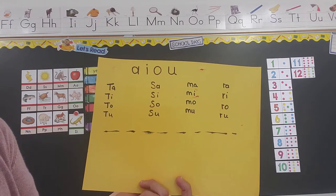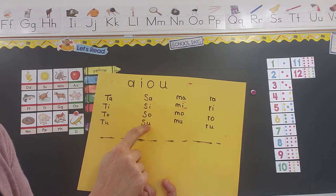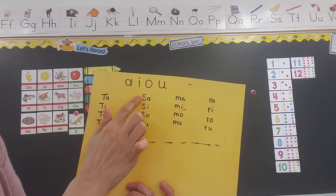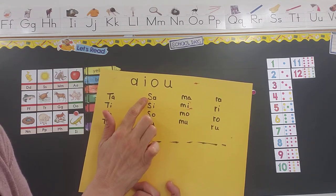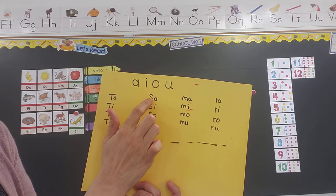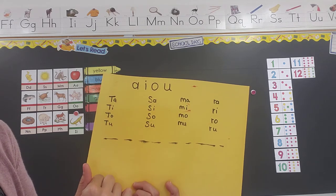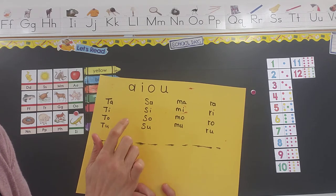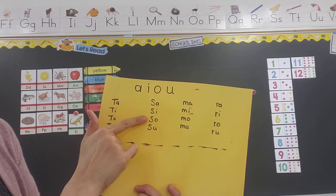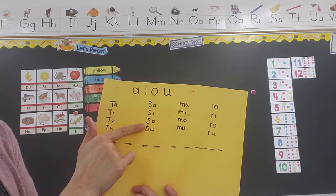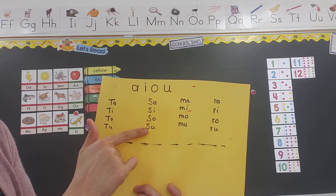And then if you put the S in front of A, I, O, and U, it's: S-A is 'sa,' S-I is 'si,' S-O is 'so,' and S-U is 'su.' Let's say them all together, are you ready? Sa, si, so, su. Again: sa, si, so, su. Faster: sa, si, so, su.